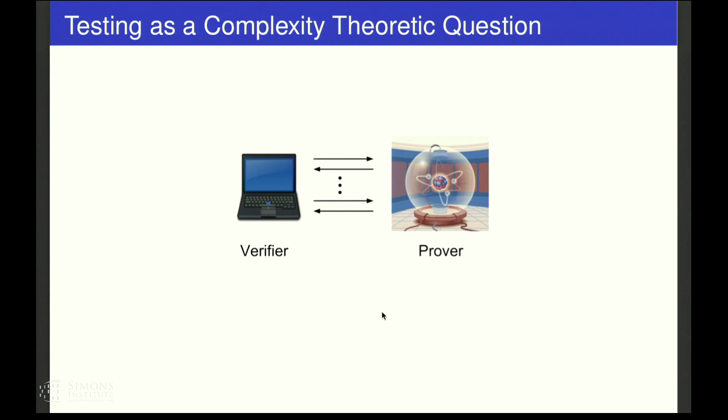We have a classical computer, which we refer to as a verifier, and a quantum computer, which we refer to as a prover. The verifier is going to interact with the prover, and the goal of this interaction is to verify some quantum behavior.